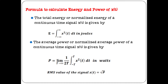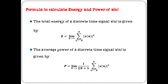To find the RMS value of the signal x(t), we can take the square root of power. To calculate energy for x[n], the formula is: limit as N tends to infinity of summation from n = -N to N of |x[n]|². To calculate power: limit as N tends to infinity of (1/(2N+1)) summation from n = -N to N of |x[n]|².